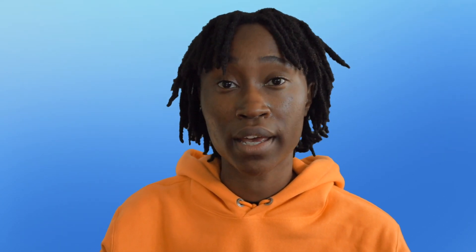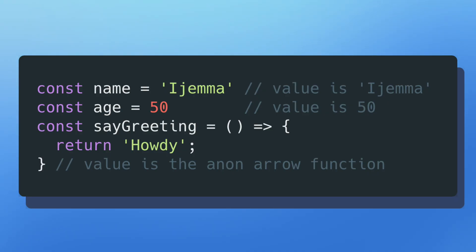The concept of a higher order function isn't common throughout all modern programming languages. We're able to take advantage of higher order functions inside of JavaScript because the language treats functions just like any other value. The same way that a string, a number, or an array is a regular value, a reference to a function is also a value. Here we can see I have a constant name assigned to 'ijema', a constant age assigned to 50, and greeting doing the same thing where the value assigned to it is an anonymous arrow function that returns the string 'howdy'.